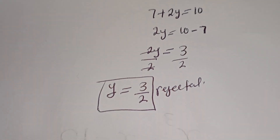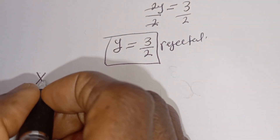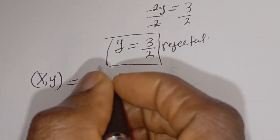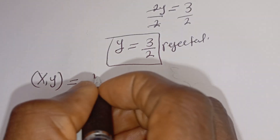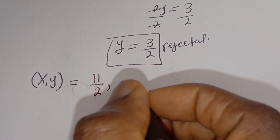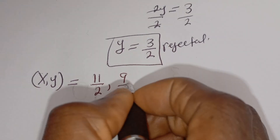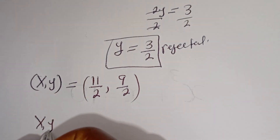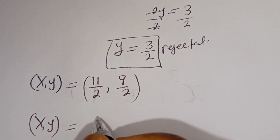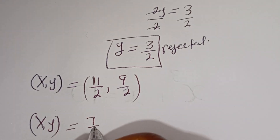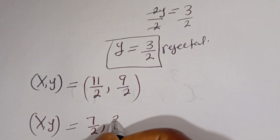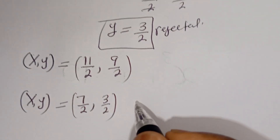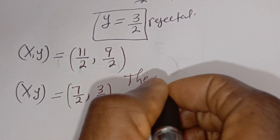Therefore, all our final answers are: from Case 1, (X, Y) equals (11/2, 9/2); and from Case 2, (X, Y) equals (7/2, 3/2). As you can see, all of these are not natural numbers. So we conclude that there is no solution.